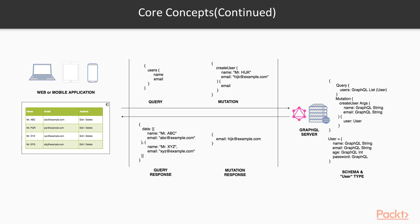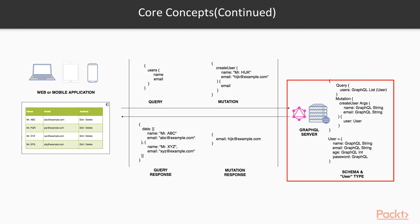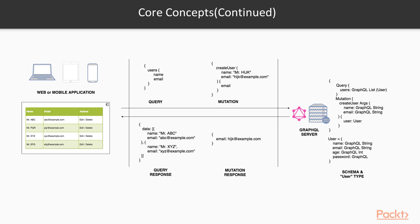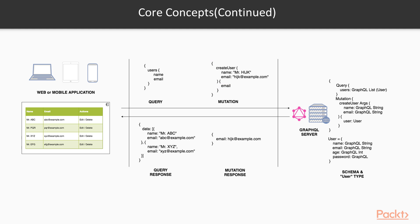In GraphQL, we define schema on the server and the client can get the needed data using queries or mutations. A query is used to perform a get operation, and a mutation is used to perform create, update, or delete operations. A GraphQL server exposes a single API with query and mutation features. A client uses a query to get a list of users with fields name and email, and the GraphQL server responds with only a JSON schema containing name and email. Now suppose you want to create a user — you can do that using mutation queries. Using mutation, you call create user and pass name and email. After the user is created, if you only need email in the response, just specify email in your mutation query, and the GraphQL server will send only email, which can then be rendered on your front-end application.